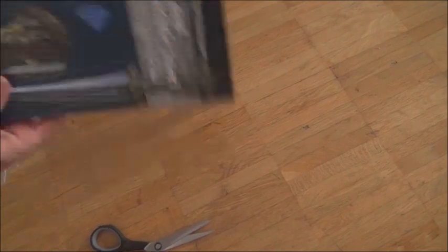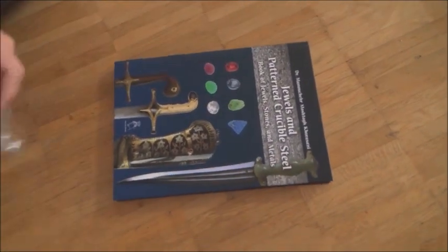Everything is - you can take a look at that. Now, so I'm going to open it so you can take a look. It starts here: Jewels and Patterned Crucible Steel, Book of Jewels, Stones, and Metals.